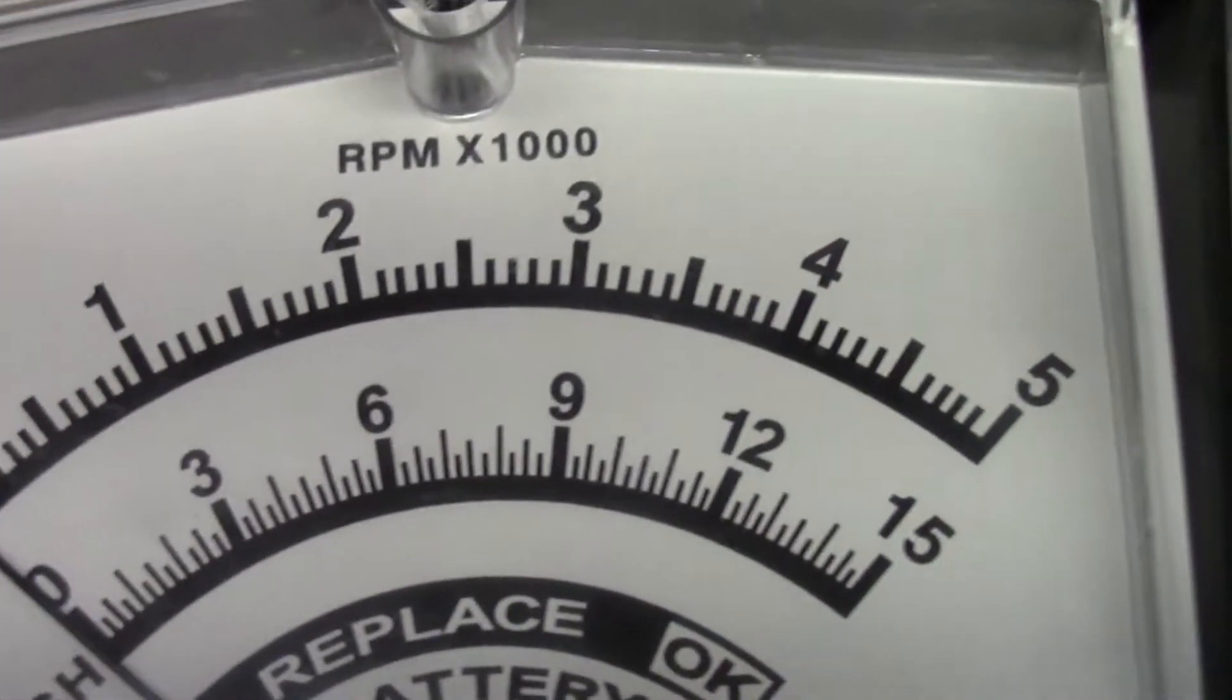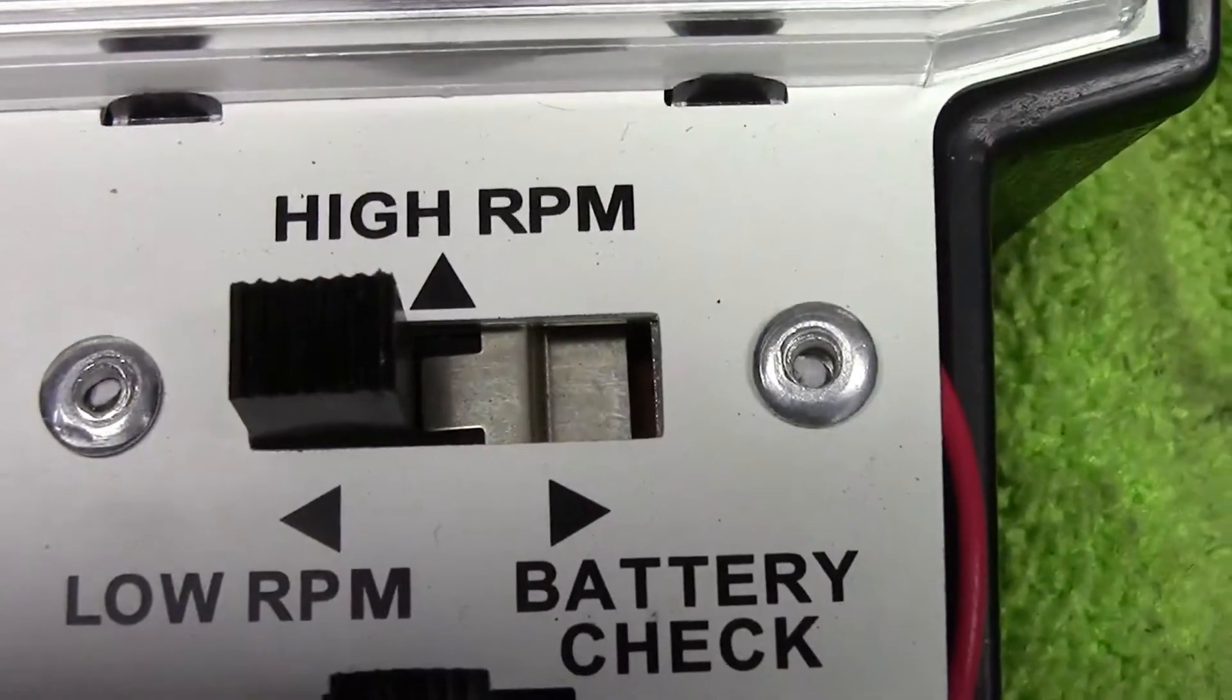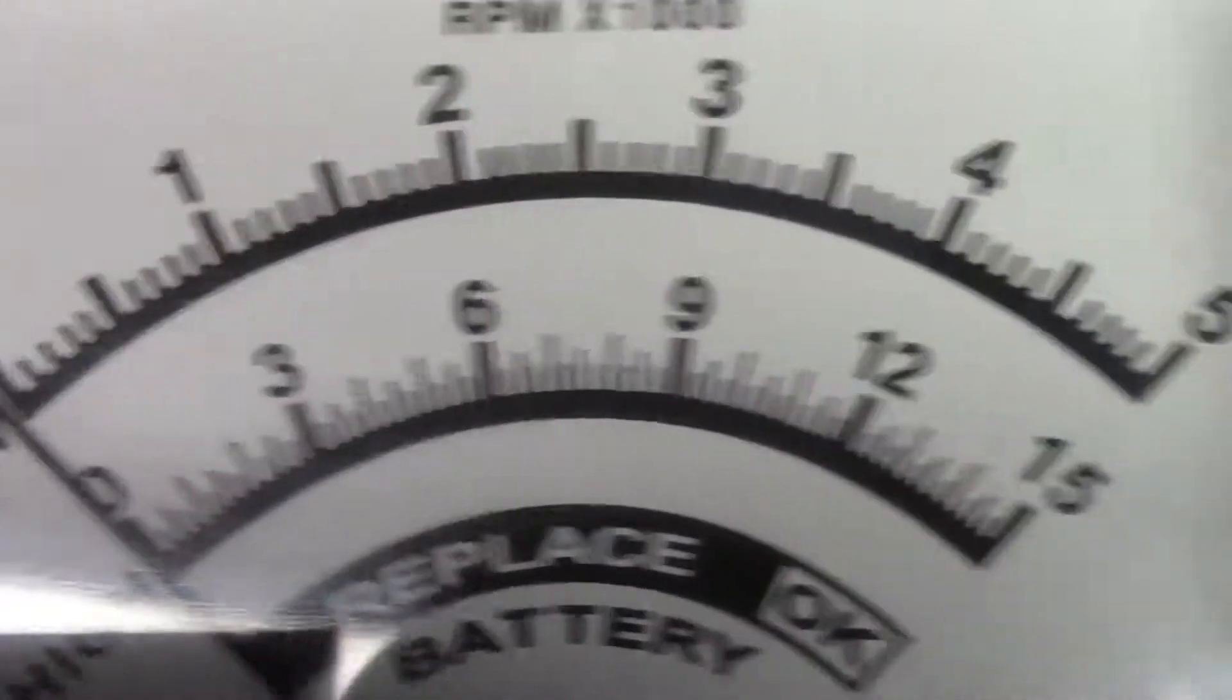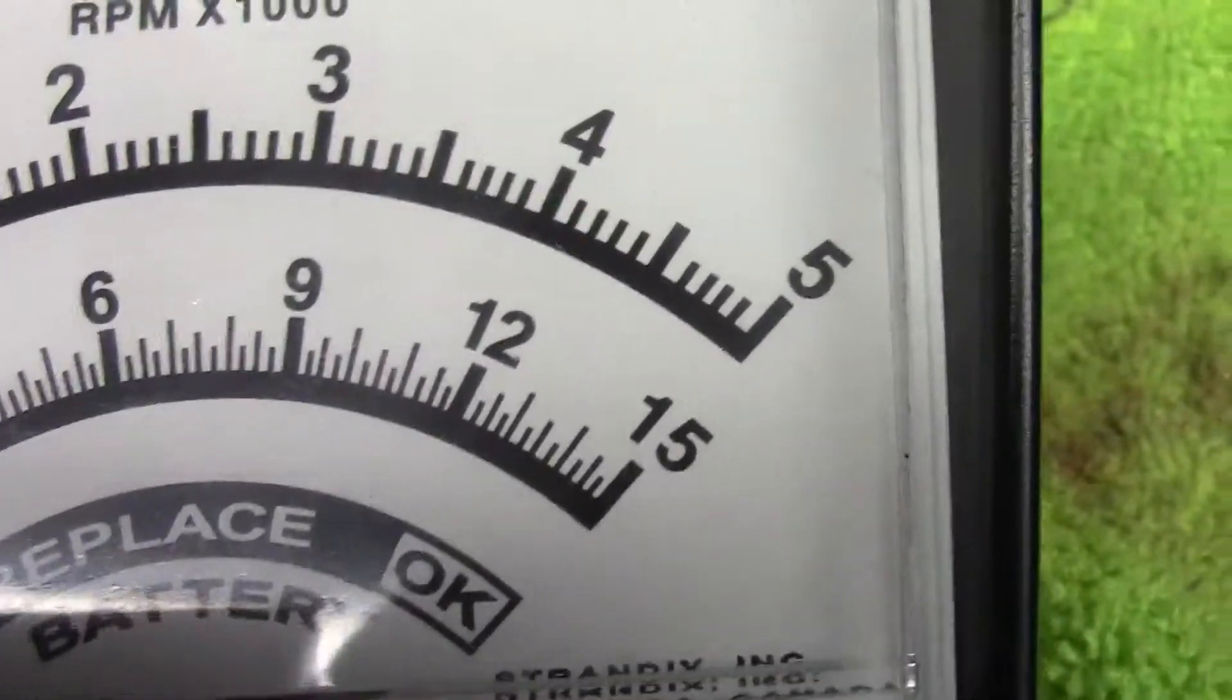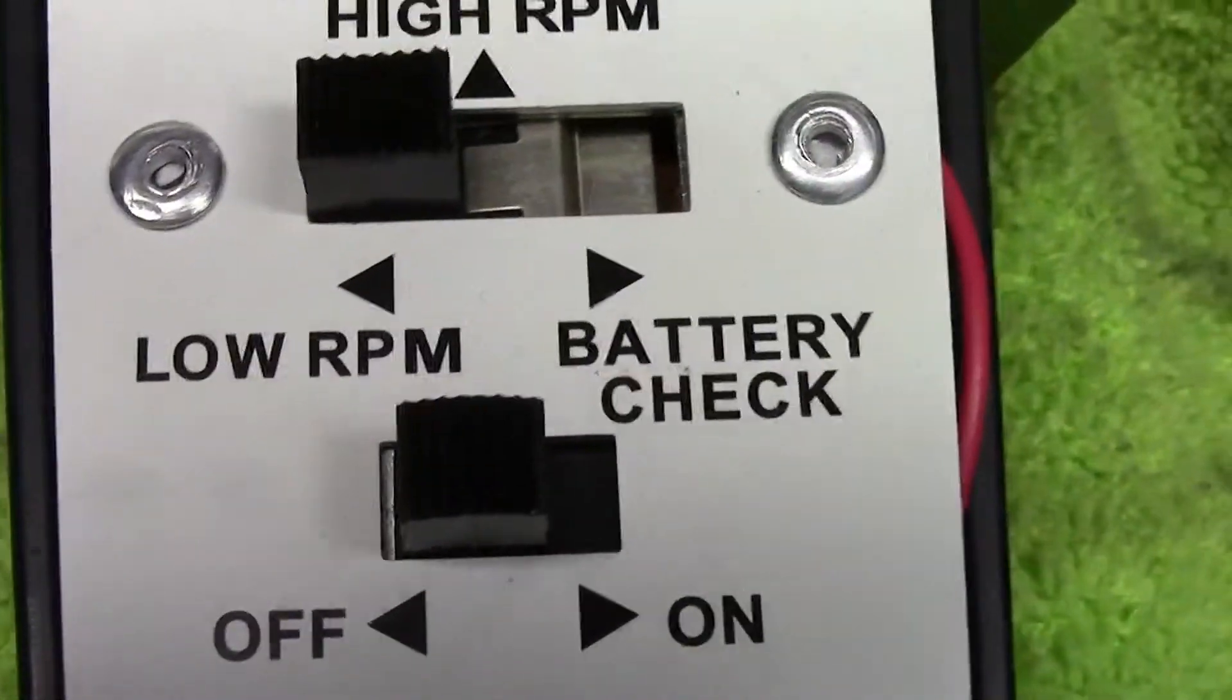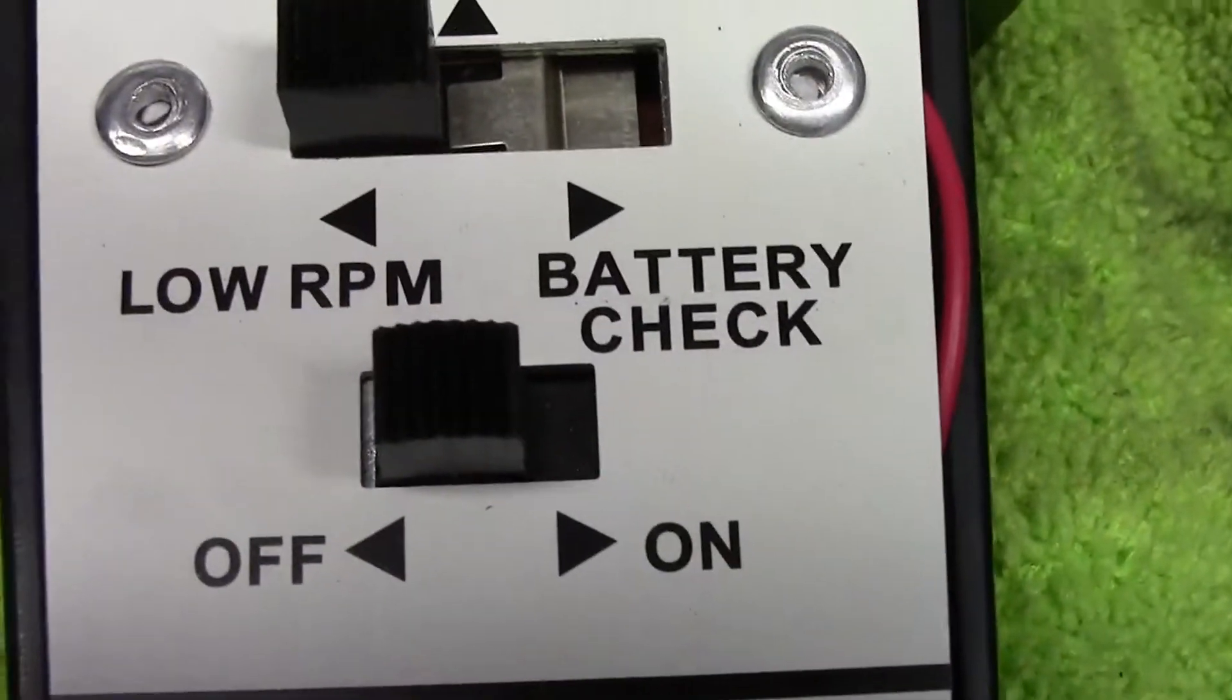Now if you look at the control panel, there's a high RPM setting which goes to 15,000 revolutions per minute, and a low setting which goes from zero to 5,000 revolutions per minute. This also has a battery check option. You just switch that switch over into the battery check position and the needle slams against the right side of the face, which I'm not crazy about.